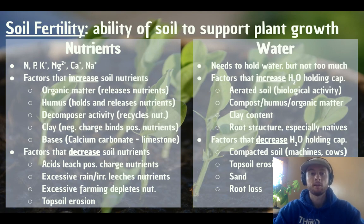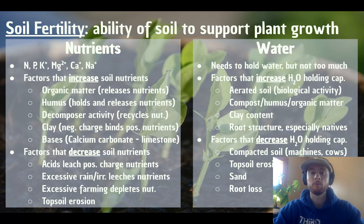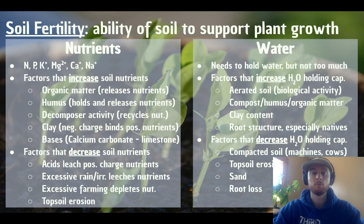Now we'll look at water. Soil that is well aerated — meaning it has a lot of channels created by organisms like earthworms burrowing through it — will allow the soil to hold more water and air. The addition of organic matter, compost, or humus can also act like a moisturizing layer that prevents evaporation loss from the soil. Native plants with deep root structures also help retain moisture and prevent the soil from drying out. Factors that dry out soil include compaction, since there are fewer pores to hold moisture, as well as topsoil erosion and loss of root structure.